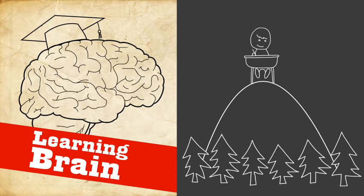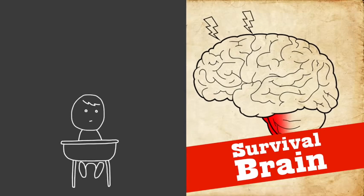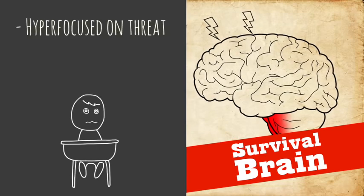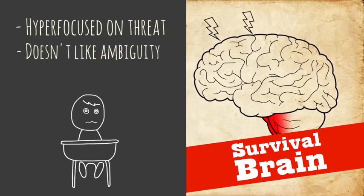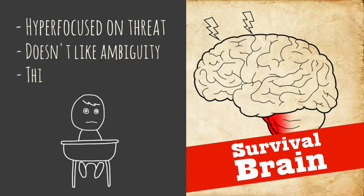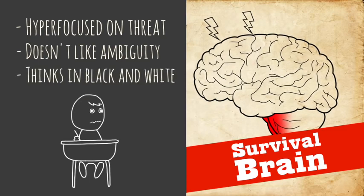Now survival brain, on the other hand, is completely different. It's hyper-focused on threat. It doesn't like ambiguity. It wants clear, hard facts. It thinks in black and white terms. It doesn't want anything to be gray at all.